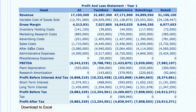Tech Bots managed their inventory well, followed by Robotronics, while AI and Robo Kings have had trouble with a lot of inventory. Let's compare the inventory holding cost line with the short-term interest line. Companies with low inventory holding costs are also companies with low short-term interest, which includes emergency loans.